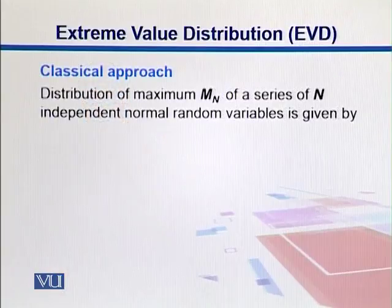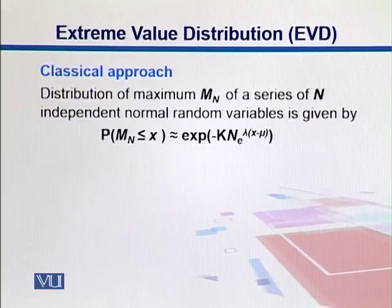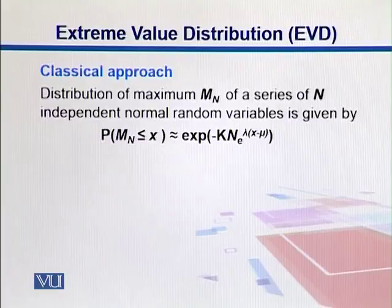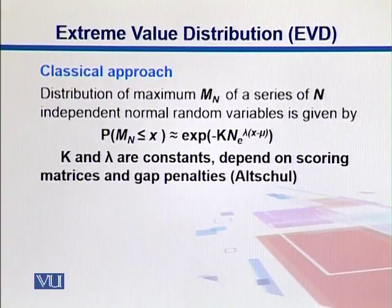We take all those scores and take their maximum numbers. All scores are actually normal random numbers that can attain any value. We pick up the maximum among them and draw their distribution. The probability of getting those maximum scores less than a threshold x is given by the equation: e to the power of minus K·n·e to the power of minus lambda times (x minus mu), where K and lambda are constants that depend on scoring matrices and gap penalties.